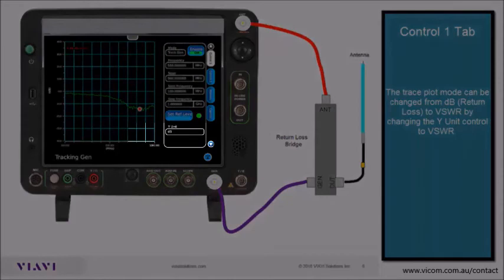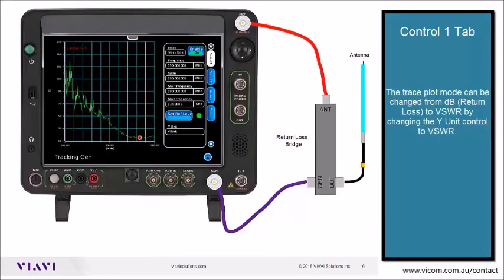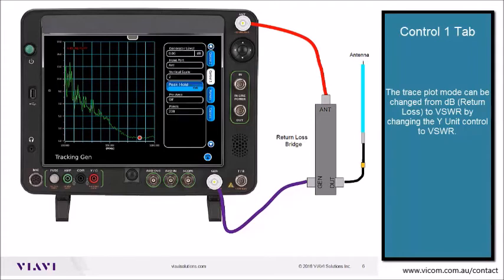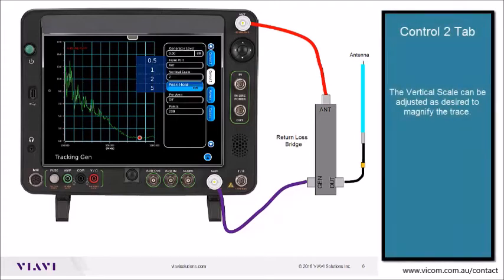Now the trace plot mode can be changed from dB return loss to VSWR by changing the Y unit control to VSWR. The vertical scale can be adjusted as desired to magnify the trace.